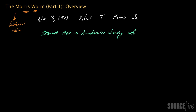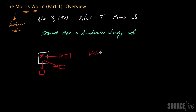That being said, the Morris worm is extremely important from a historical perspective, and in many ways it was a major impetus behind the development of cybersecurity as a formal field — it really served as a major wake-up call. As soon as the worm got onto a system, it would attempt to connect to and install itself on other hosts connected to that first system. The worm took advantage of several technical vulnerabilities, specifically in three Unix programs: the SendMail program, the FingerD program, and the RSH/R-Exec program.